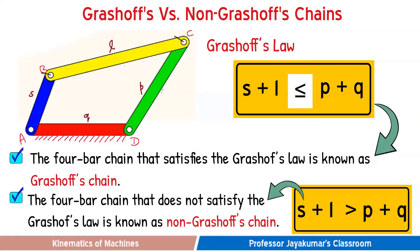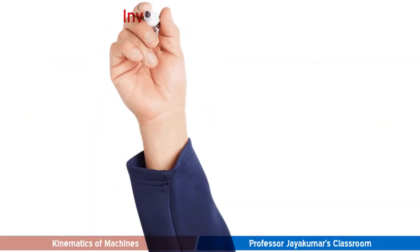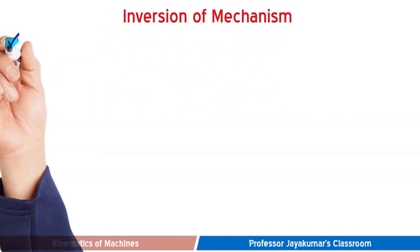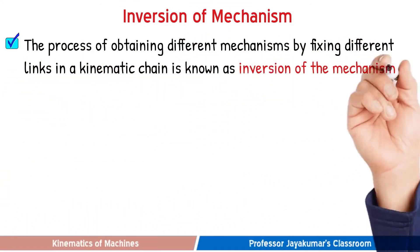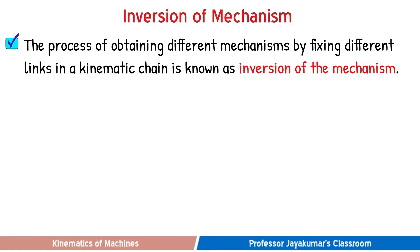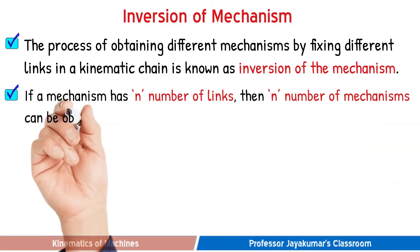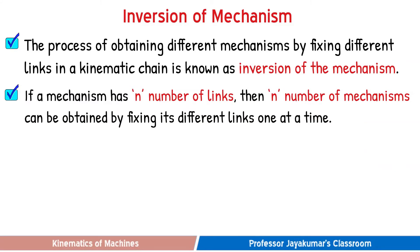The key difference is that in a Grashof's chain we will have a link acting as a crank, whereas in a non-Grashof's chain there will be no crank — meaning we will not have a rotating link. Now let us introduce the term inversion of mechanism. By fixing any one of the links of a kinematic chain, we get a mechanism. By fixing different links, we get different mechanisms. The process of obtaining different mechanisms by fixing different links in a kinematic chain is known as inversion of the mechanism. If a mechanism has n number of links, by fixing each link one at a time, we should be able to get n number of mechanisms.